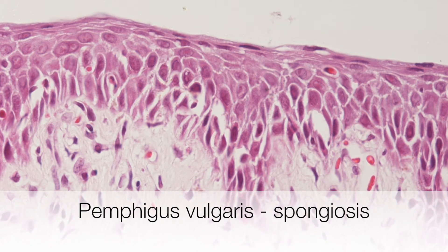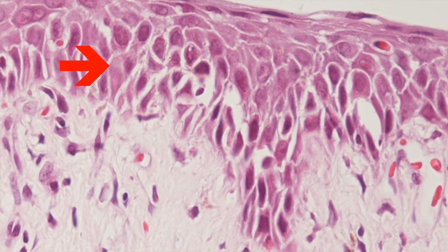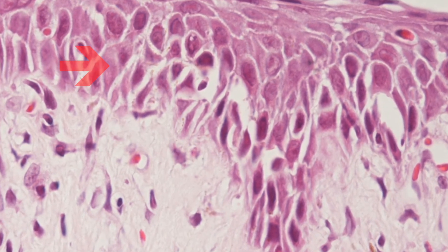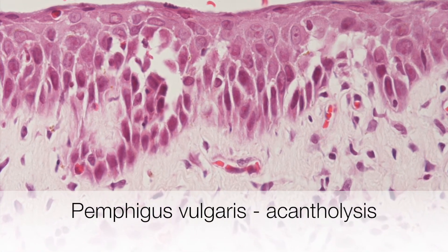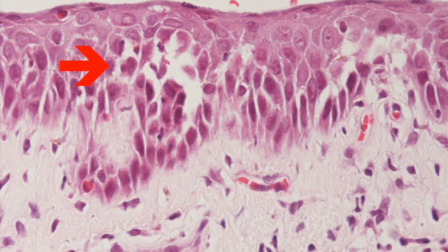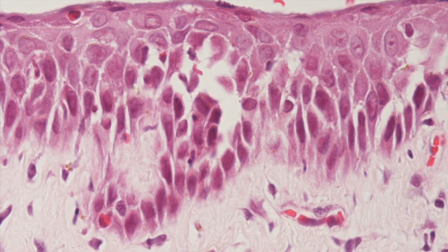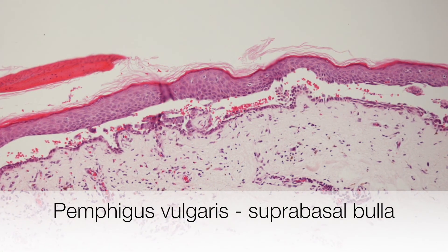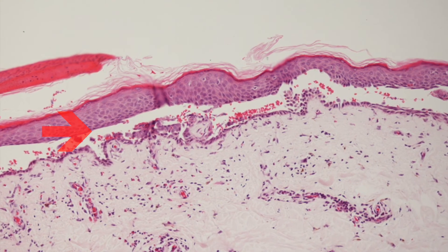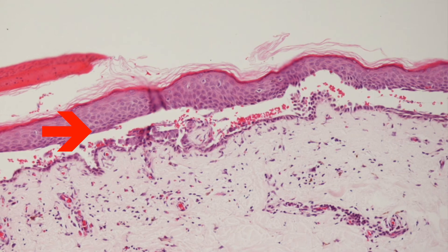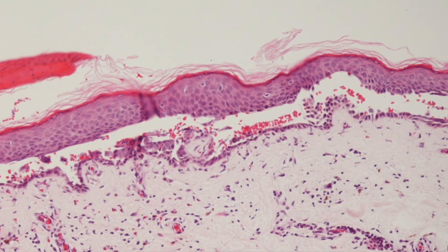This is the earliest change in Pemphigus vulgaris: there is edema or spongiosis affecting the lower epidermis. The keratinocytes in the lower epidermis start to separate — this is acantholysis. The acantholysis leads to bulla formation. This is a low power view of a typical bulla in Pemphigus vulgaris with the suprabasal location.